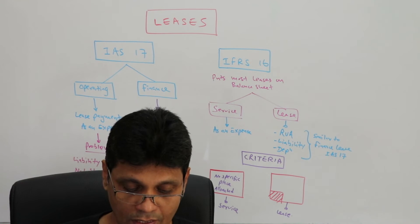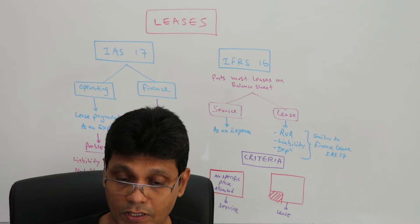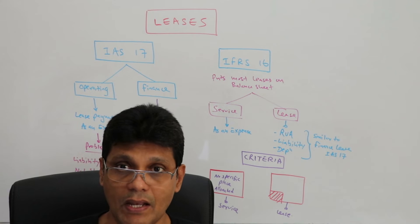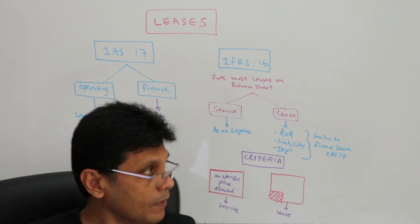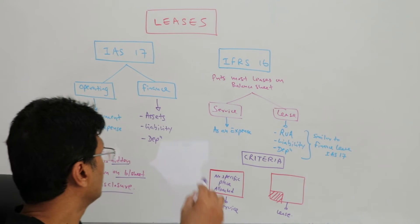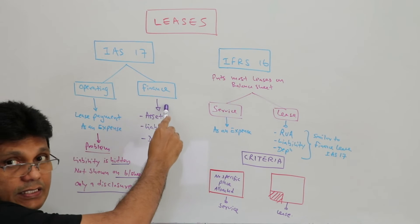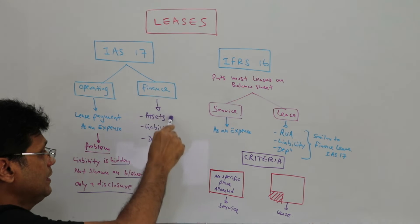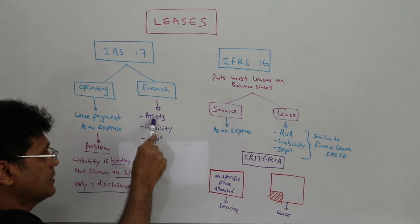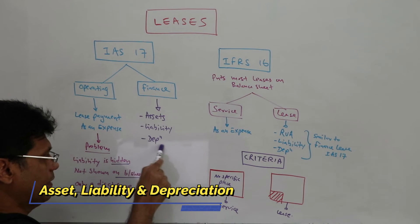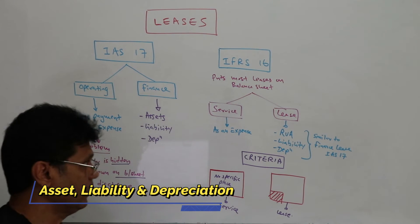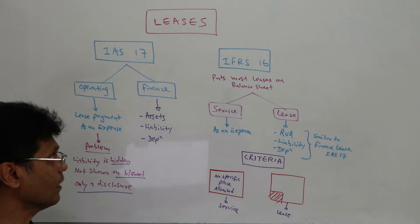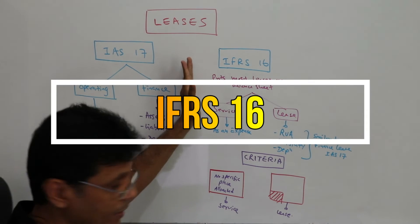In order to avoid that discrepancy — the hiding of the liability — IFRS 16 was introduced. It recognizes most leases on the balance sheet. Under IAS 17, the other category is the finance lease: the lessee has to recognize an asset, a liability, and depreciation.